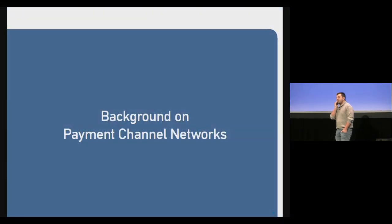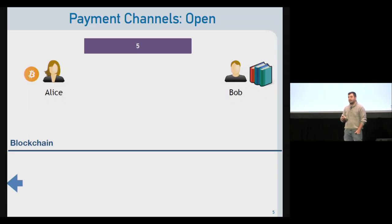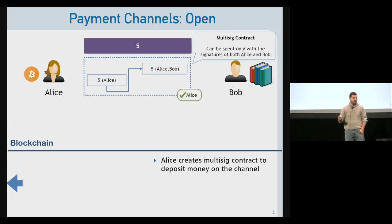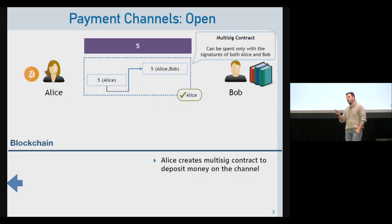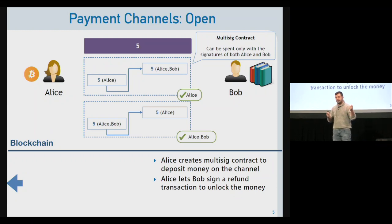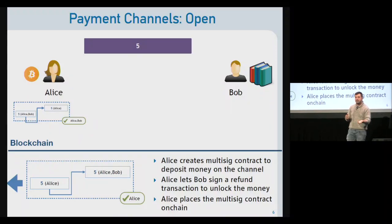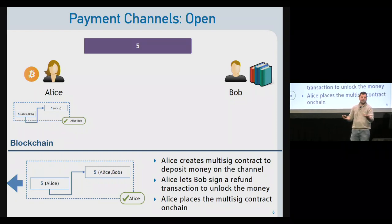Let me start with a little background on payment channel networks. Alice has some bitcoins and wants to buy a product from Bob. She can open a payment channel by creating a transaction that transfers five coins to a multi-sig contract — a contract that can only be spent when both Alice and Bob agree. To ensure Alice can recover the funds, she has Bob sign a refund transaction that transfers coins back from the multi-sig contract to Alice. Alice then puts the transaction on-chain, opening the payment channel, and keeps the refund transaction locally.